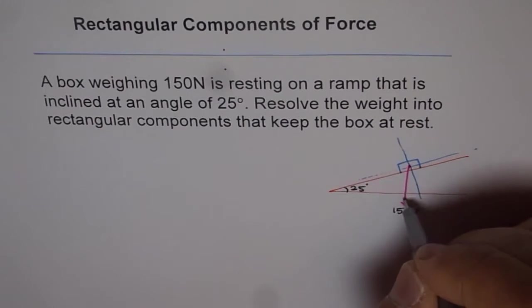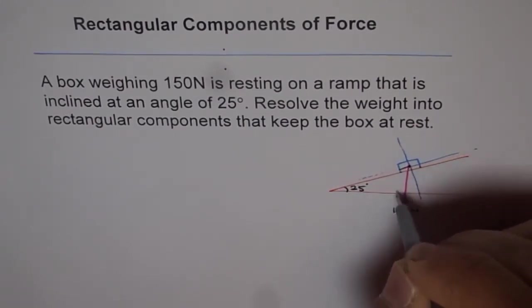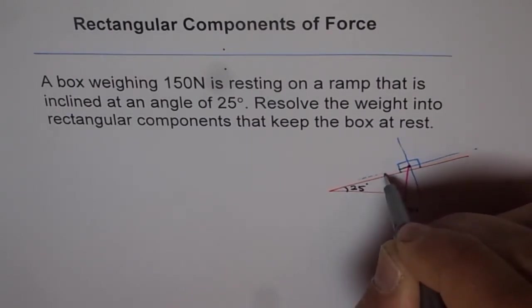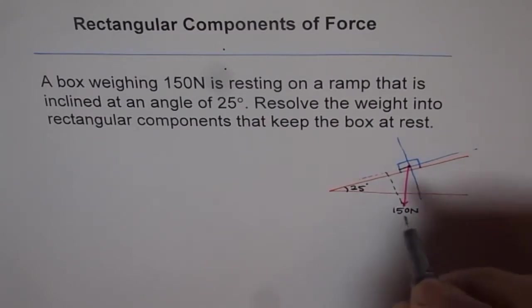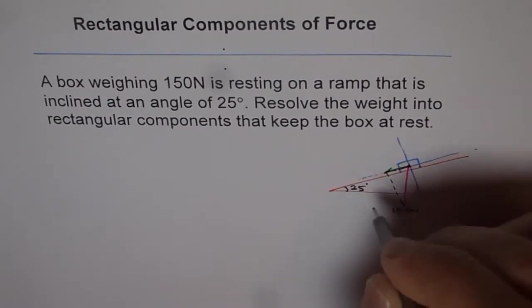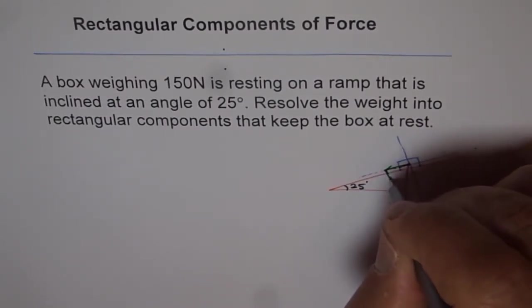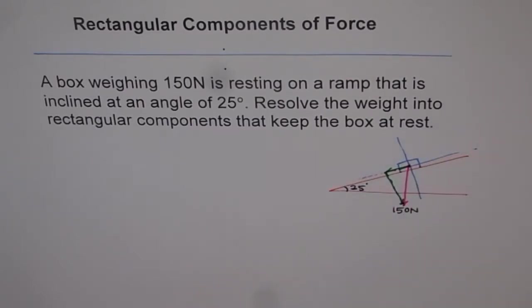To make a rectangle with this force, we drop a perpendicular on the inclined axis. This gives us a component along the inclined plane and a component perpendicular to it — a normal component. That is how we resolve weight, which is acting downwards, into its two components.